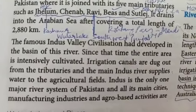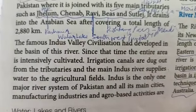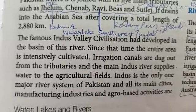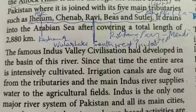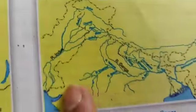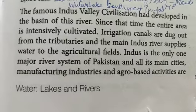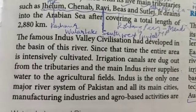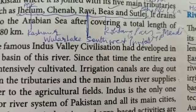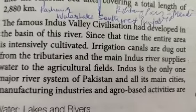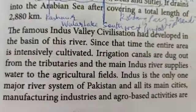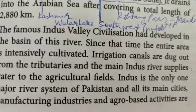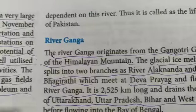The famous Indus Valley Civilization had developed in the basin of this river. Since that time the entire area has been intensively cultivated. The Harappan and Mohenjo-daro ruins are found mainly in Pakistan. Indus irrigation canals are dug from the tributaries and the main Indus River supplies water to agricultural fields. Indus is the only major river system of Pakistan, unlike India where you have the Ganga, Yamuna, Narmada and Tapi. All of Pakistan's main cities, manufacturing industries and agro-based activities are dependent on this river.